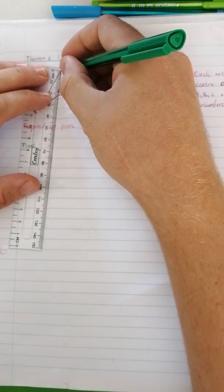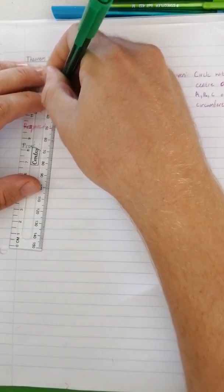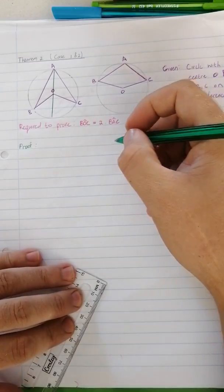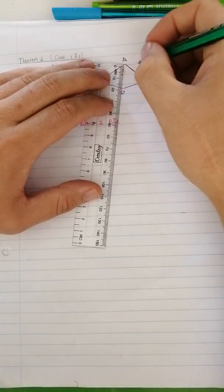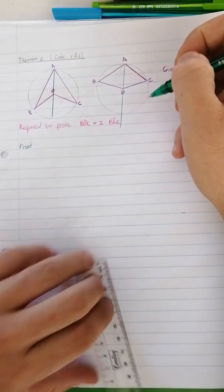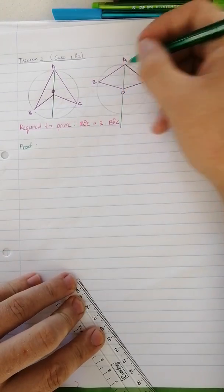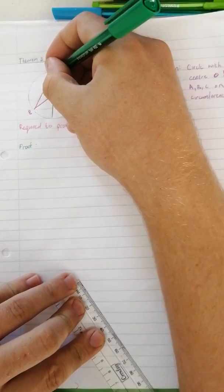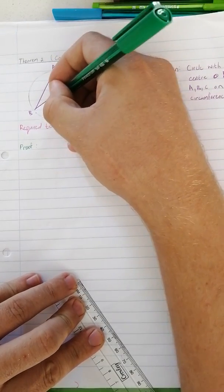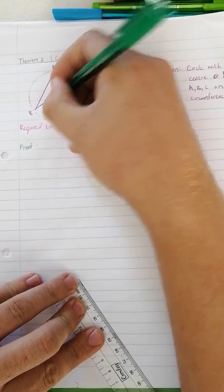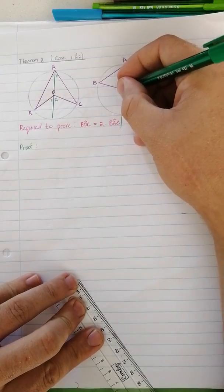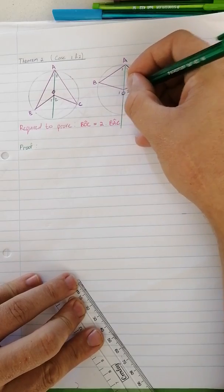So I'm going to construct AO and take it all the way through. And the same on this side, AO and take it all the way through. Oops, that one's a little bit long. Okay so then we're going to call this A1, A2, O1, O2. The same on this side: A1, A2, O1, O2.